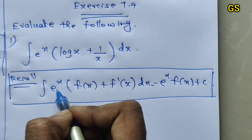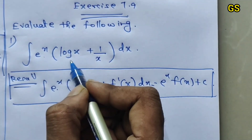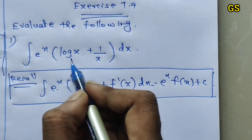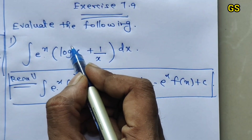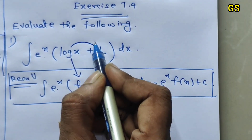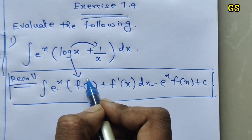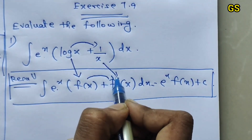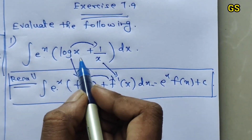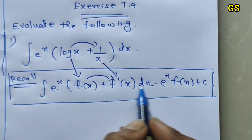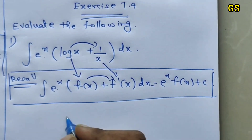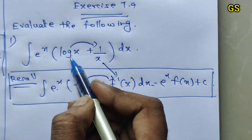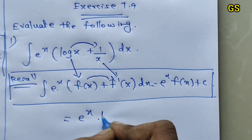Here, e power x is given. f(x) equals log x. We differentiate log x to get f dash of x equals 1 by x. Since f dash is placed with f(x), the answer is e power x into f(x), which is e power x into log x.